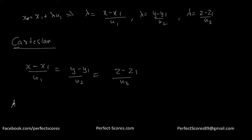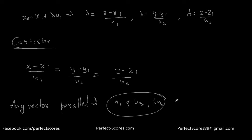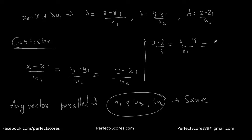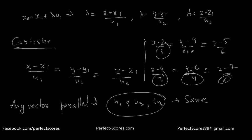Now if any vector is parallel to this vector, it will have the same u1, u2, and u3. So for example, (x minus 2)/3 equals (y minus 4)/4 equals (z minus 5)/6 is going to be parallel to our defined vector, because it has the same u1, u2, and u3. That means both vectors are parallel to each other.